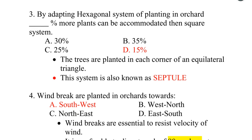Third one. By adapting the hexagonal system of planting in an orchard, 15% more plants can be accommodated than in the square system. The trees are planted at each corner of an equilateral triangle. This hexagonal system is also known as the septuple system.